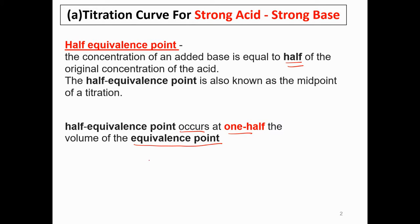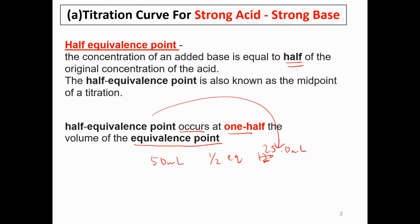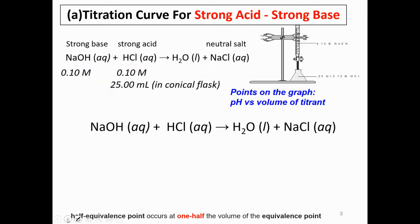Meaning that if, let's say, to reach the equivalence point you need 50 ml, then the half-equivalence point will be at 25 ml — half of the original.